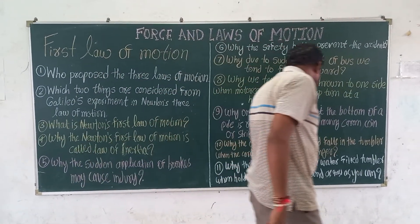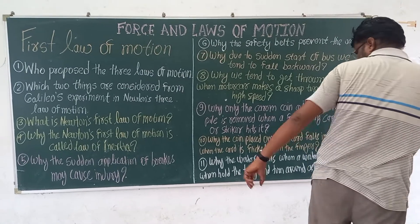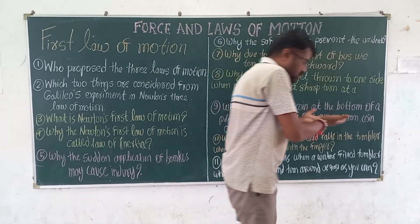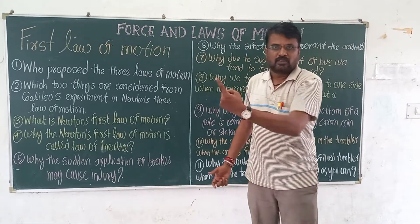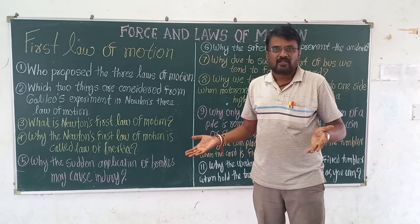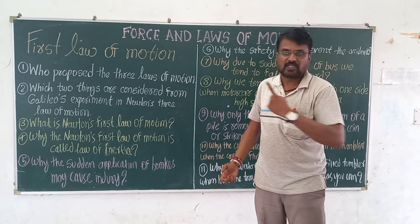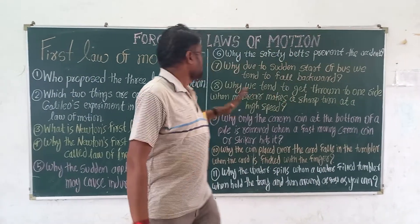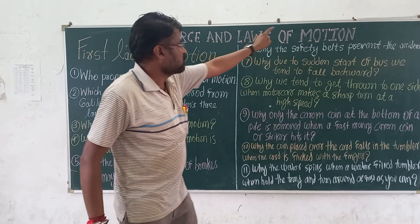Why does water spill when a water-filled tumbler is placed on a tray and you turn around as fast as you can in a circle? The water in the tumbler will try to maintain its inertia. But due to the fast circular motion, the inertia is changing and due to that the water falls out. This concludes the first law of motion, which is part of the chapter Force and Laws of Motion. Thank you.